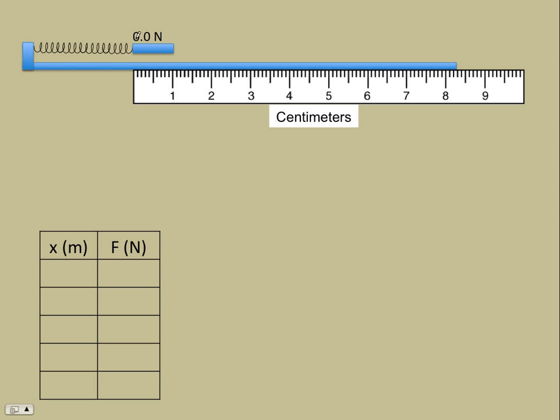This is the spring in its relaxed position and the force sensor is reading zero. So let's pull it back to the 2 cm mark after we record the force reading at x equals zero. Now the force sensor is reading 6 newtons, so it requires 6 newtons to hold it here. That would mean there's 6 newtons of tension in the spring.